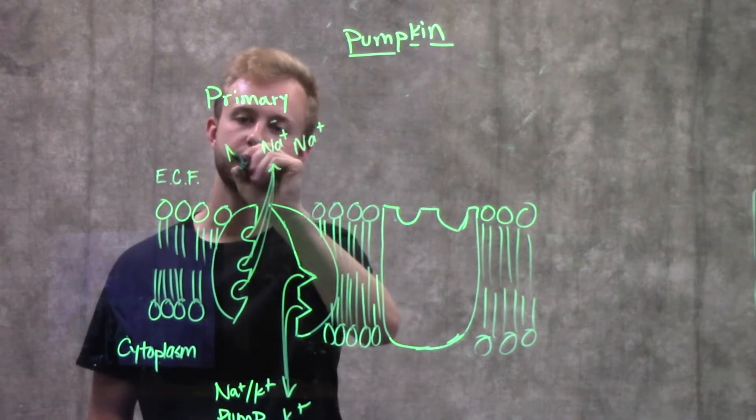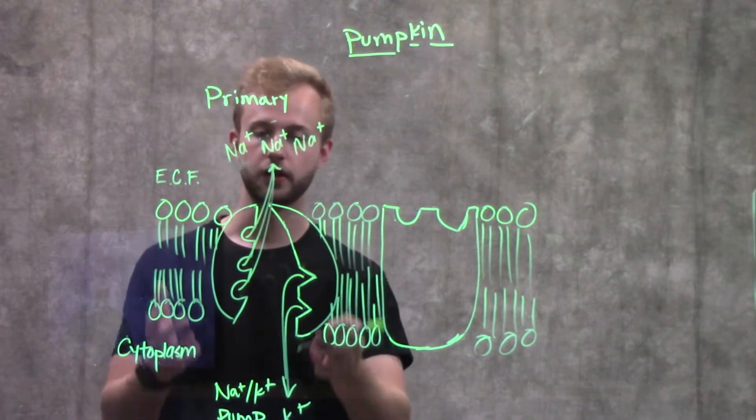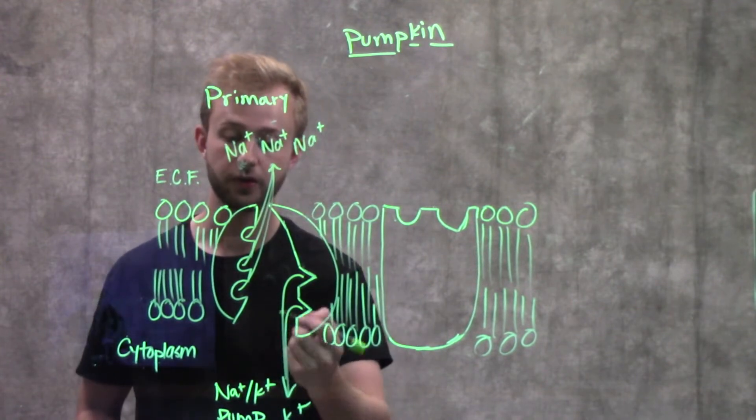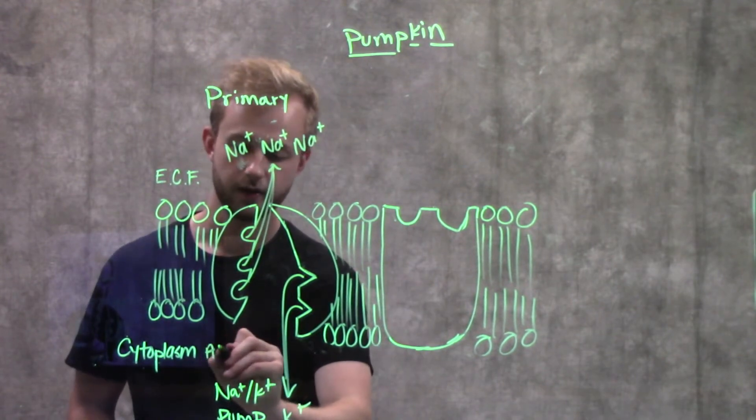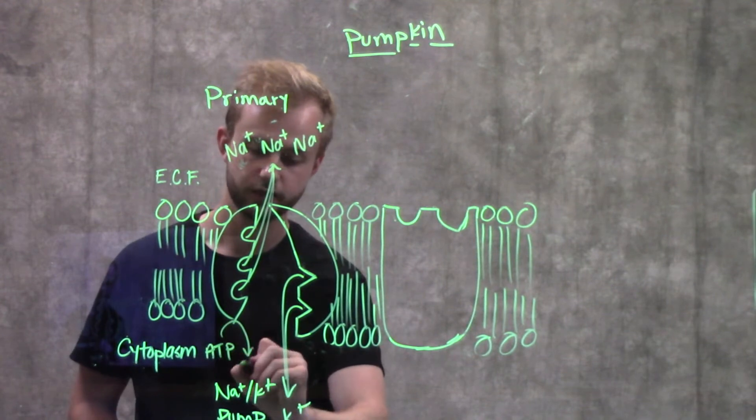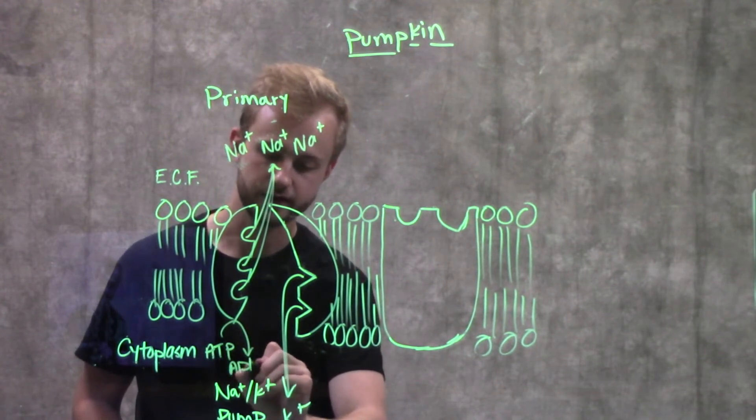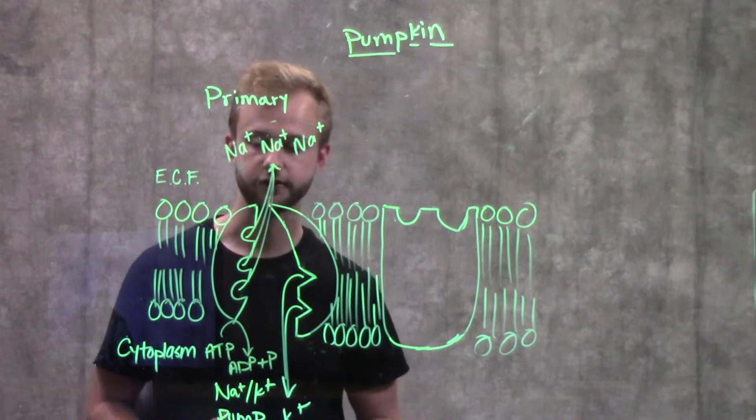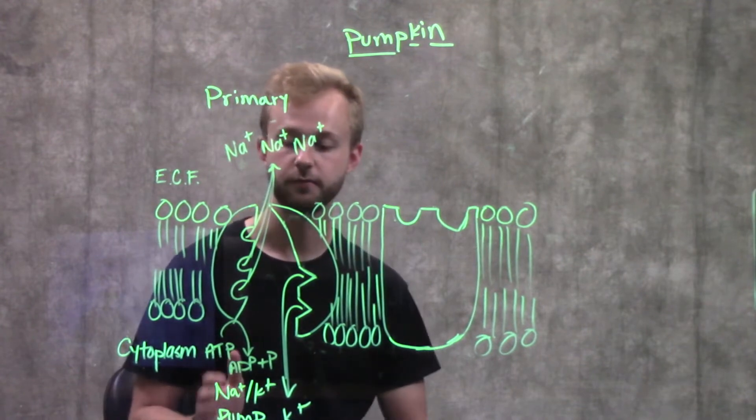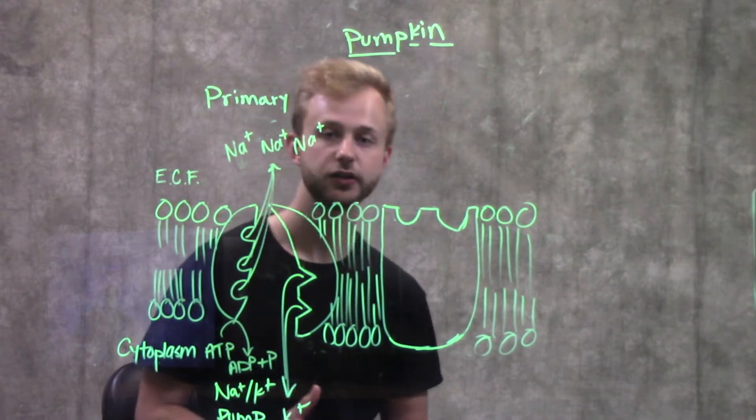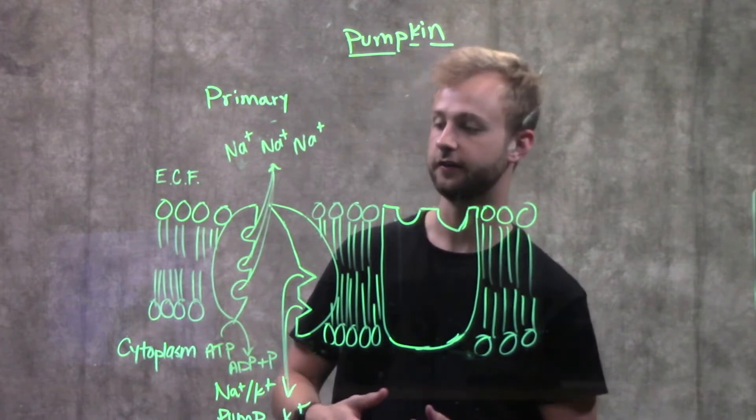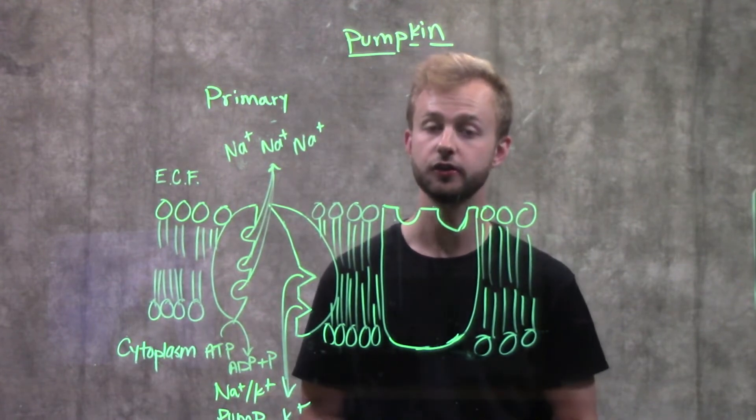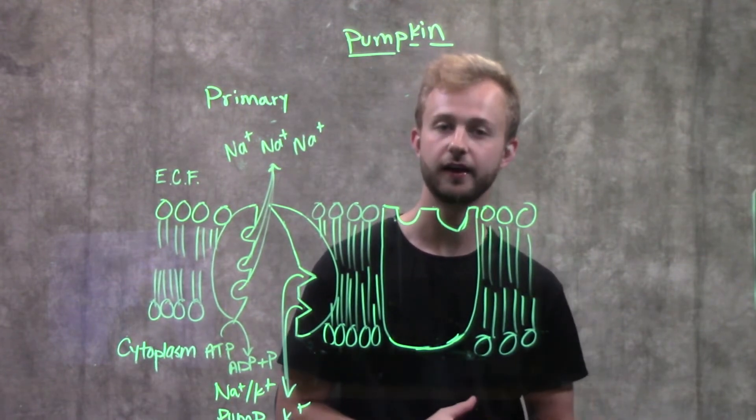And so both of these things are moved across their concentration, are up their concentration gradients by ATP binding to the protein and getting hydrolyzed to ADP plus a phosphate. Because these phosphate bonds are very high energy, so when we hydrolyze them, it makes a lot of energy available for this protein to then use.